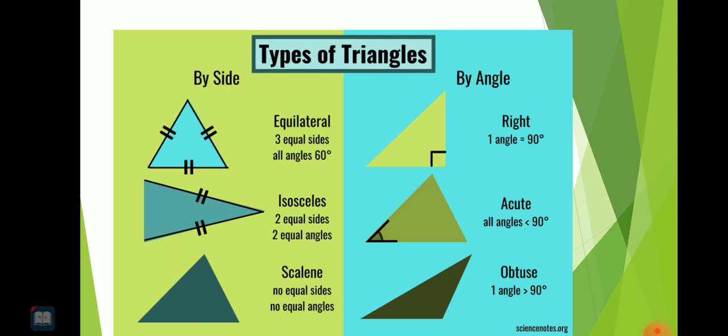Acute triangle, all angles are less than 90 degrees. Obtuse triangle, there is only one angle greater than 90 degrees.